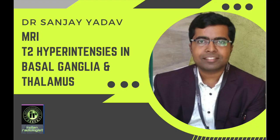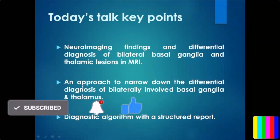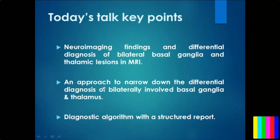Today's topic key points are to identify the neurodegenitive findings and come to a differential diagnosis based on bilateral basal ganglia and thalamic lesions, predominantly hyperintense on T2 and other imaging modalities. Most importantly, we need to narrow down the differentials and there should be a diagnostic algorithm with a structured report.